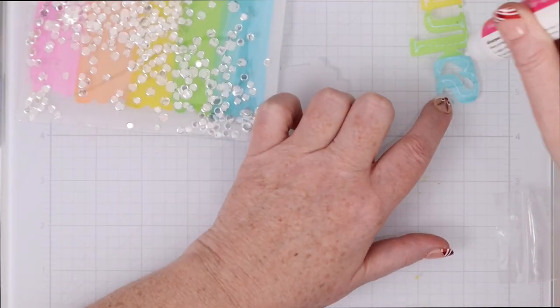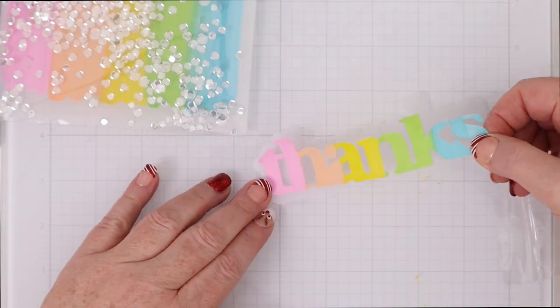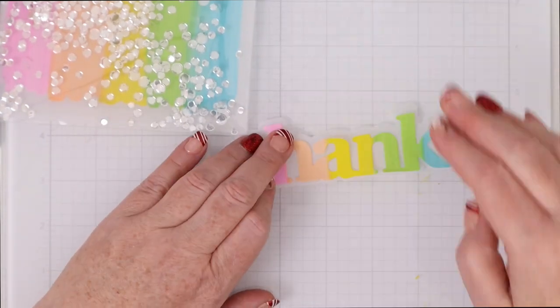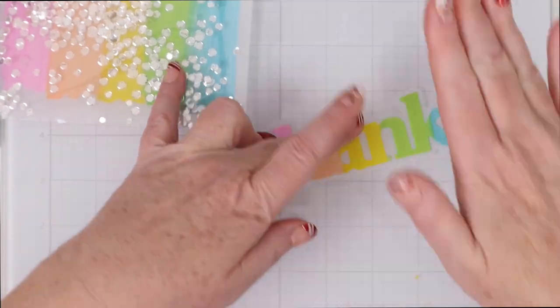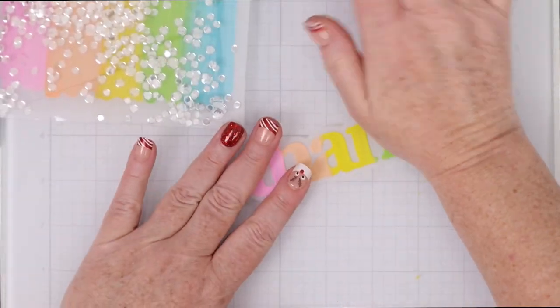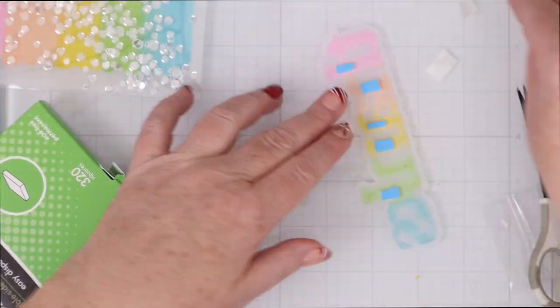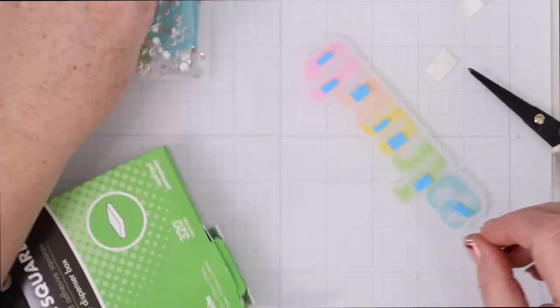I use some liquid adhesive to adhere the thanks onto the thanks shadow and then just hold that in place for a second while it dries this way again it doesn't really curl up.